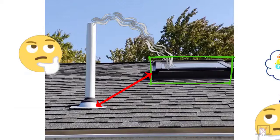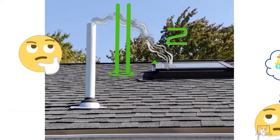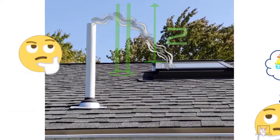Now here's the thing that a lot of inspectors even mess up. If that stack that you're seeing on this screen right now actually rose two feet above the most openable portion of that skylight — two feet above the vent terminal — you're good to go. That's what the code states. It's not 10 feet away and two feet above. It's either/or: 10 feet away or two feet above.